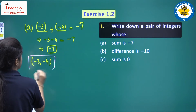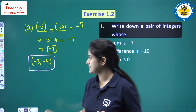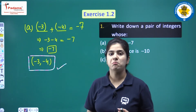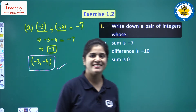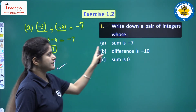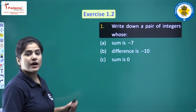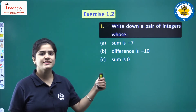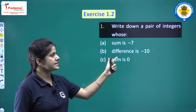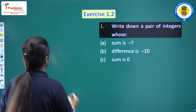You can clearly see that minus three and minus four is the pair. This was all about part a.